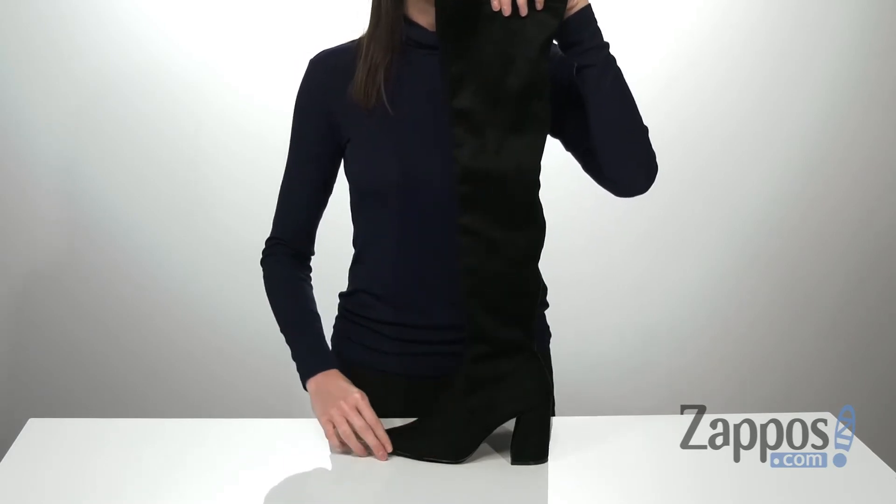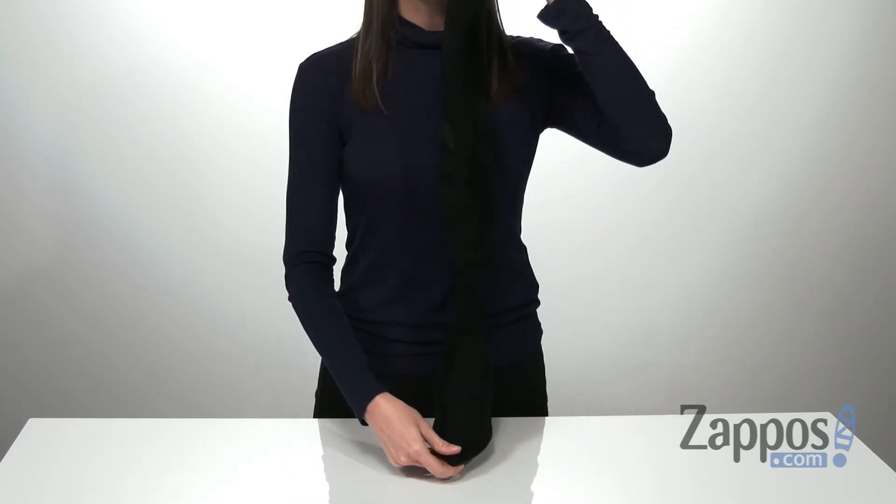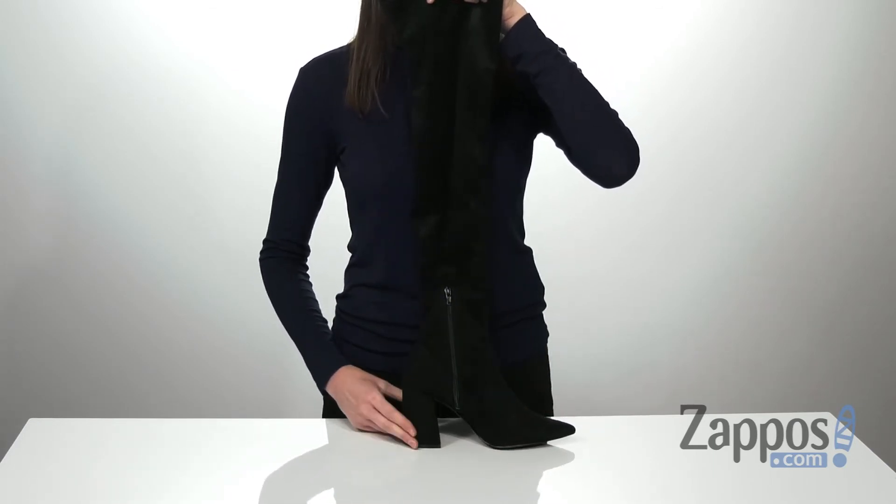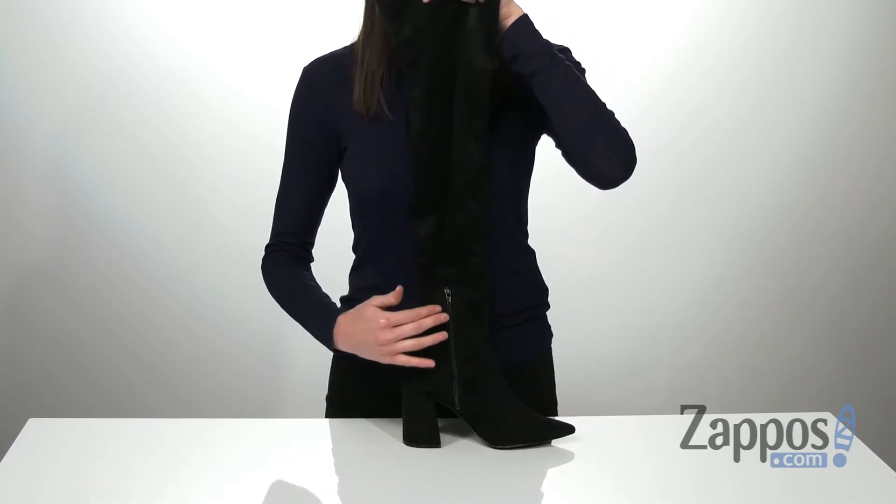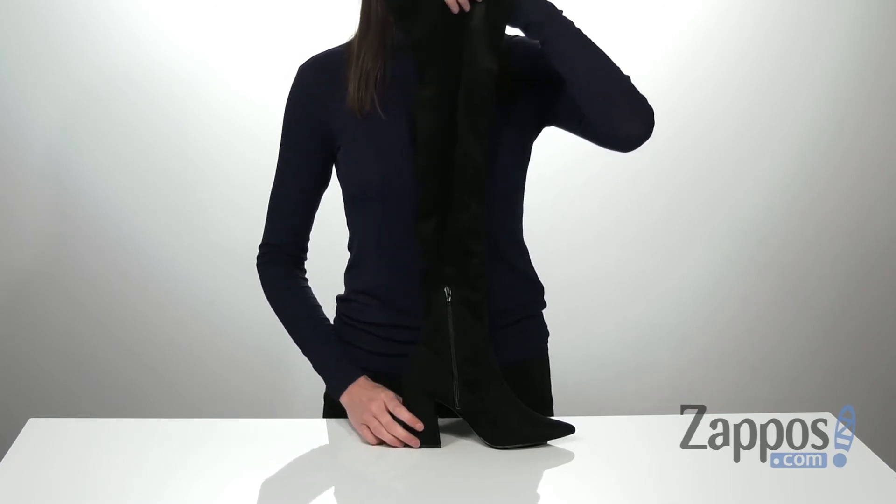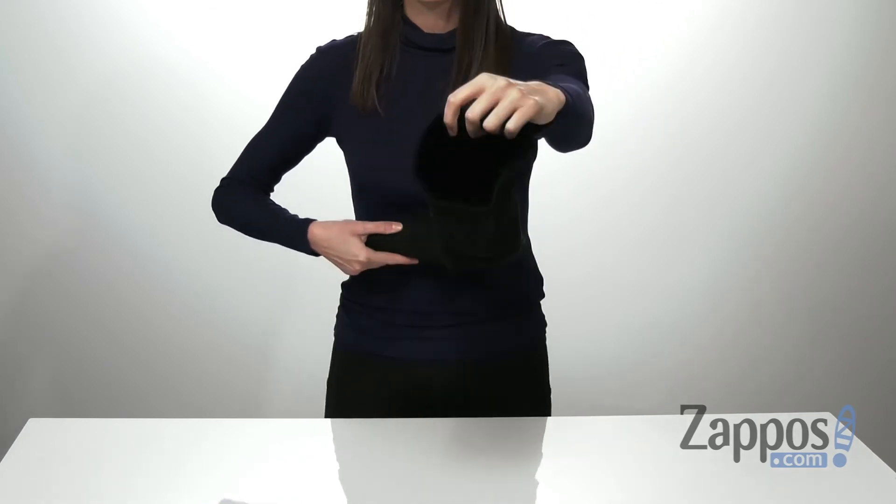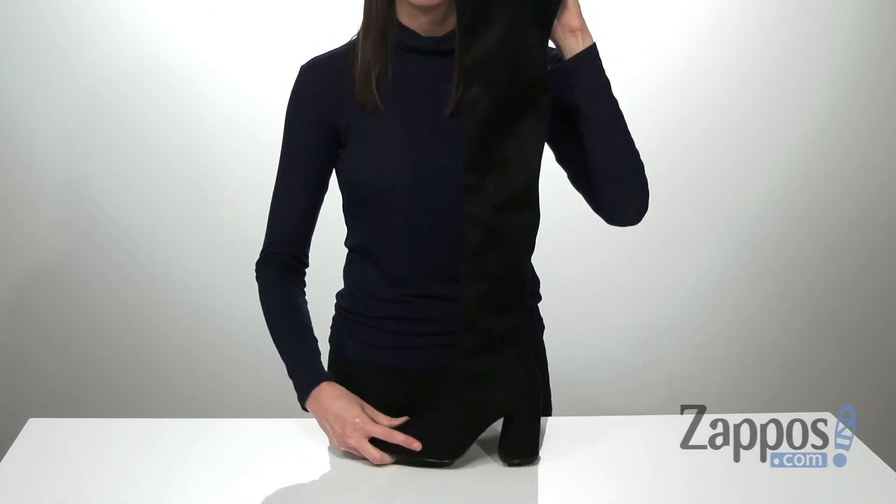for a comfortable fit. There's a pointed toe shape at the front which will help elongate your legs and a wrapped heel at the back that's two and a half inches tall. You've got a short zipper on the opposite side here to help pull these on, and underneath has a textured outsole with a textile lining and padded footbed inside.